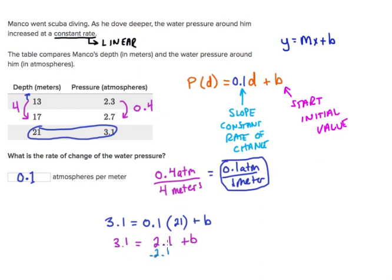We can subtract 2.1 from both sides and identify that the pressure at the start, or the y-intercept, is 1. So we can replace b with that.